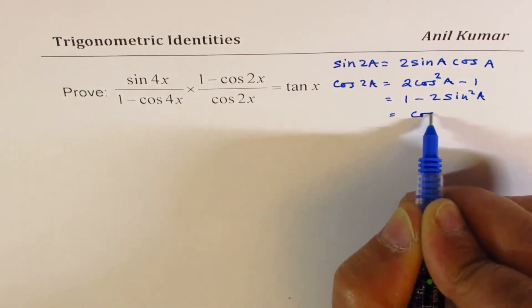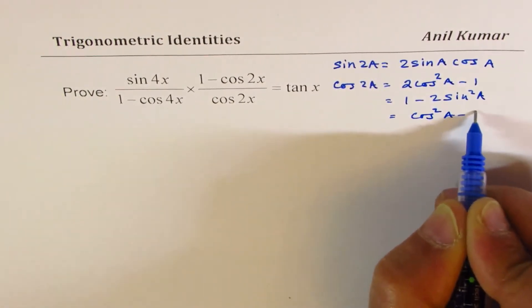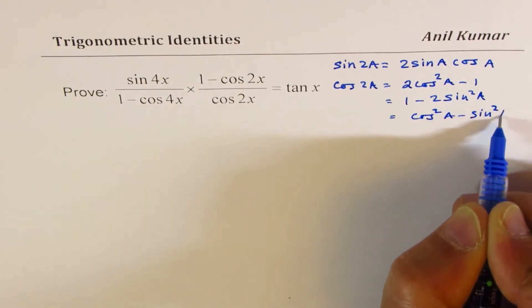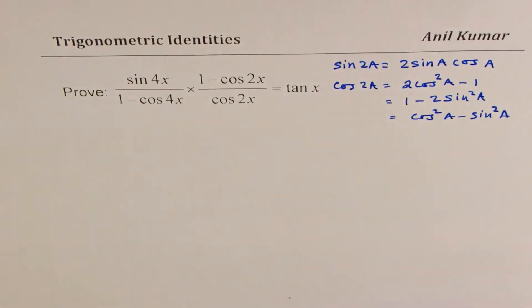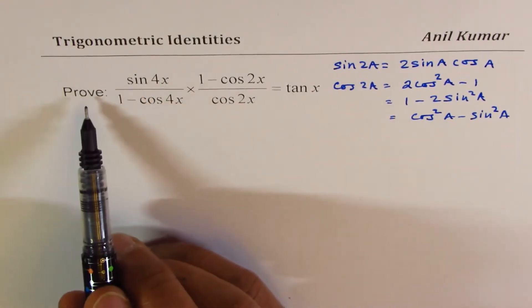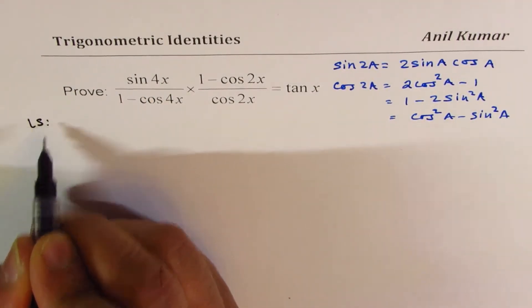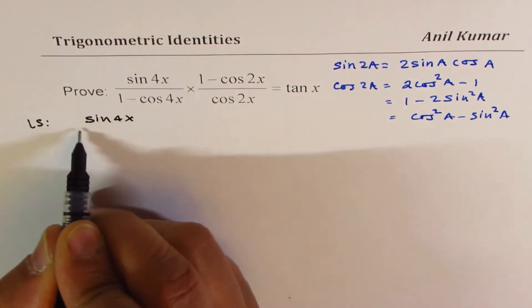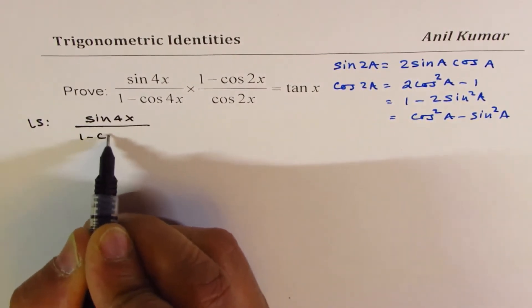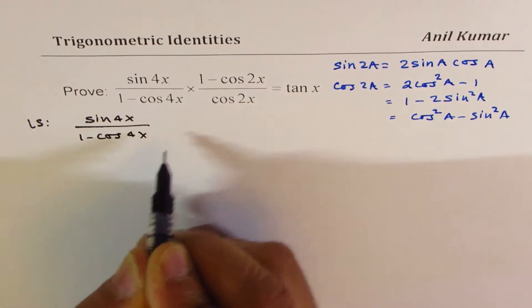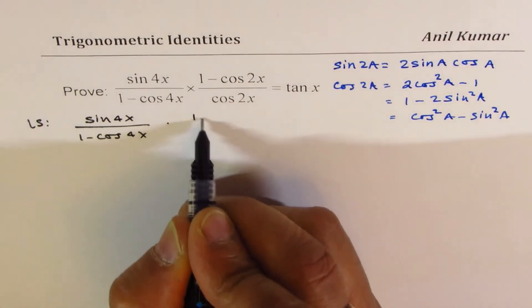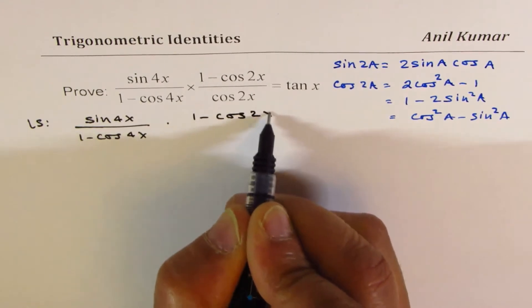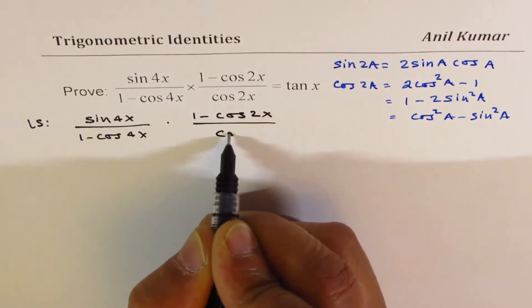We could write this also as cos square a minus sine square a. Let's see which one to use when. To solve the identity, rather prove the identity, we'll begin with the left side, which is sine 4x over 1 minus cos 4x times 1 minus cos 2x over cos 2x.